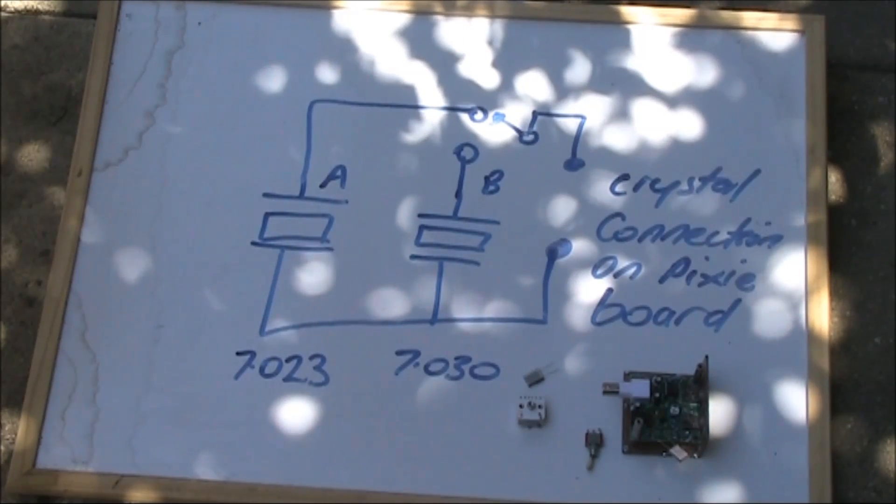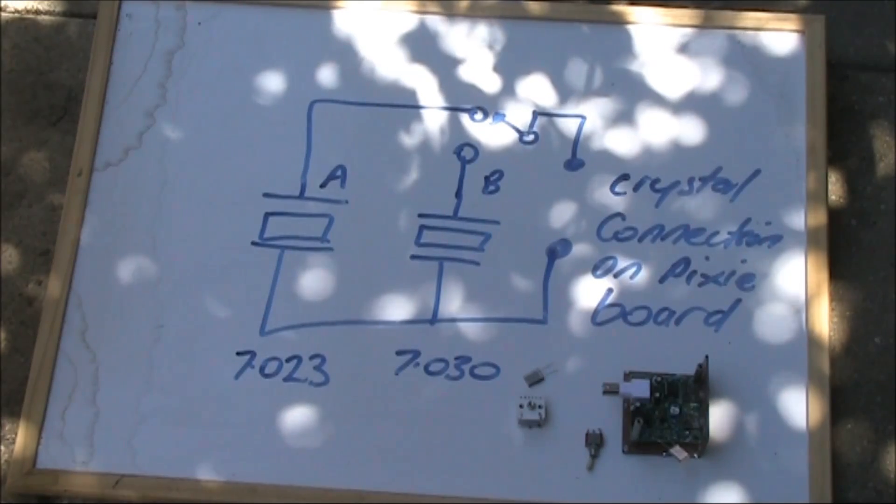If you haven't already assembled your Pixi, don't solder in the crystal just yet. Instead, put in two circuit board pins. That will make it easier to do the modifications described in this video.